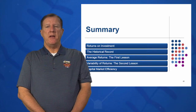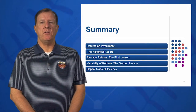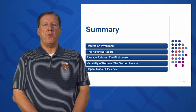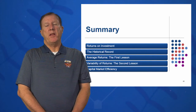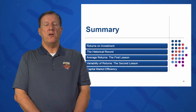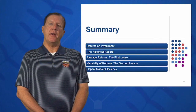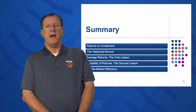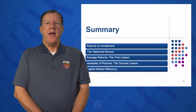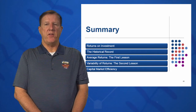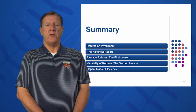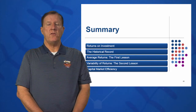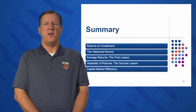In summary, we've looked at five key areas in this study of capital market history and some lessons we've learned. What are returns on investment and how do we calculate them? What is the historical record as put forth by Roger Ibbotson and Rex Sinkfeld? What has happened over the last 85 to 90 years? What are average returns for all these instruments? You should memorize those average returns and use them to make your investment decisions.